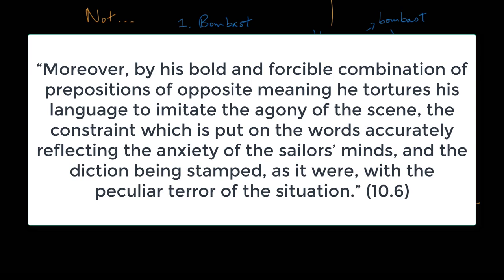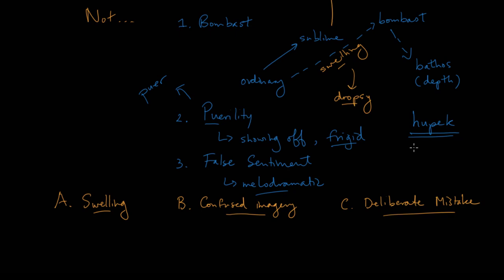Moreover, by his bold and forcible combination of prepositions of opposite meaning, he tortures his language to imitate the agony of the scene. In other words, he's describing a storm, he's describing terror, and it's as if the poet is getting carried away with his emotions, and he's so frightened and so impressed and in awe that he squeezes the words together to express the tension. Sounds grand, doesn't it? But how do you know that's what's happening? And how do you know that this is not an actual mistake instead of a deliberate mistake?